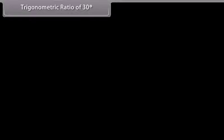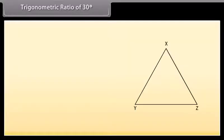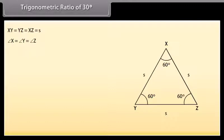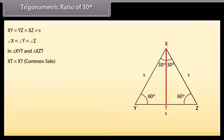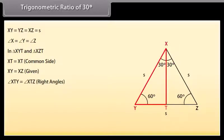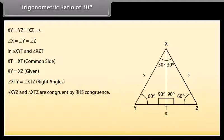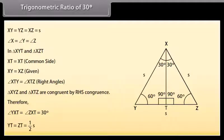Trigonometric ratio of 30 degrees: Consider the equilateral triangle XYZ where XY = YZ = XZ = S, and all angles equal 60°. Draw a perpendicular from vertex X to intersect side YZ at T. In triangles XYT and XZT: XT is common, XY = XZ, and angles XTY = XTZ = 90°. Therefore triangles XYT and XZT are congruent by RHS. Hence angle YXT = angle ZXT = 30°, and YT = ZT = S/2.